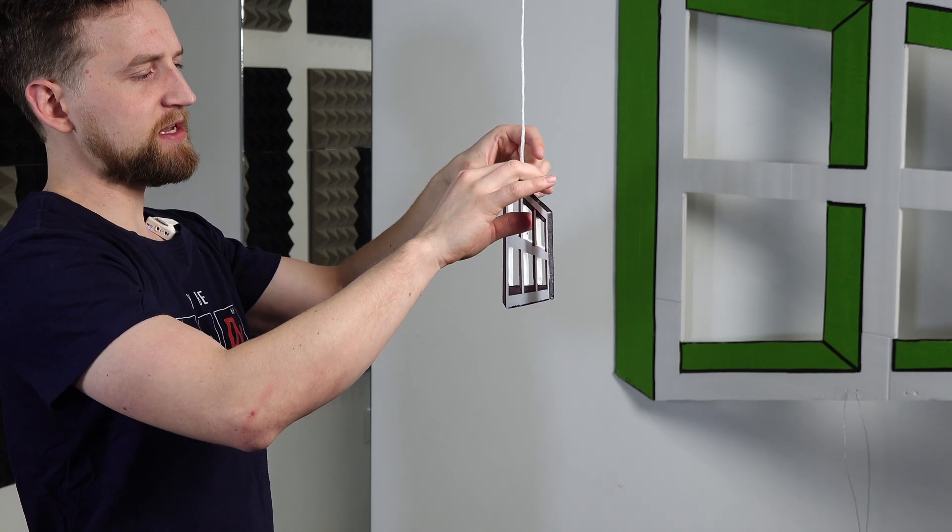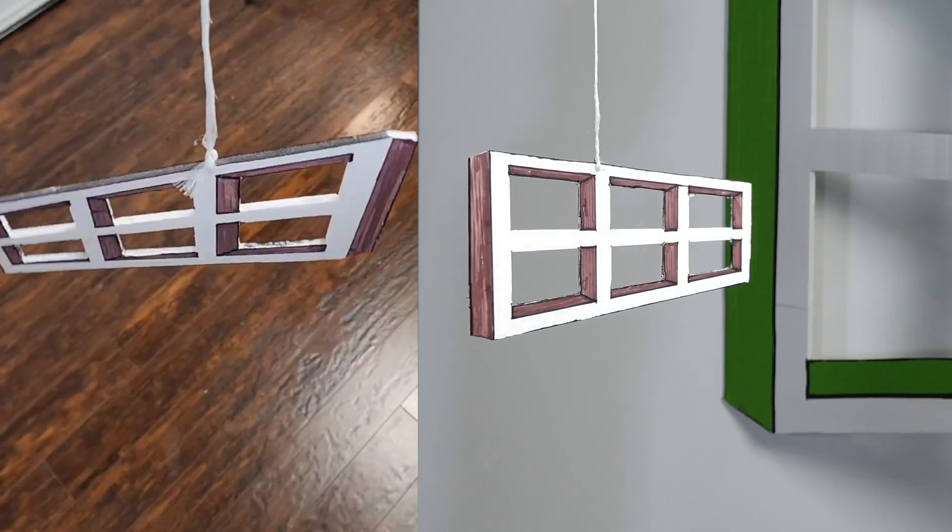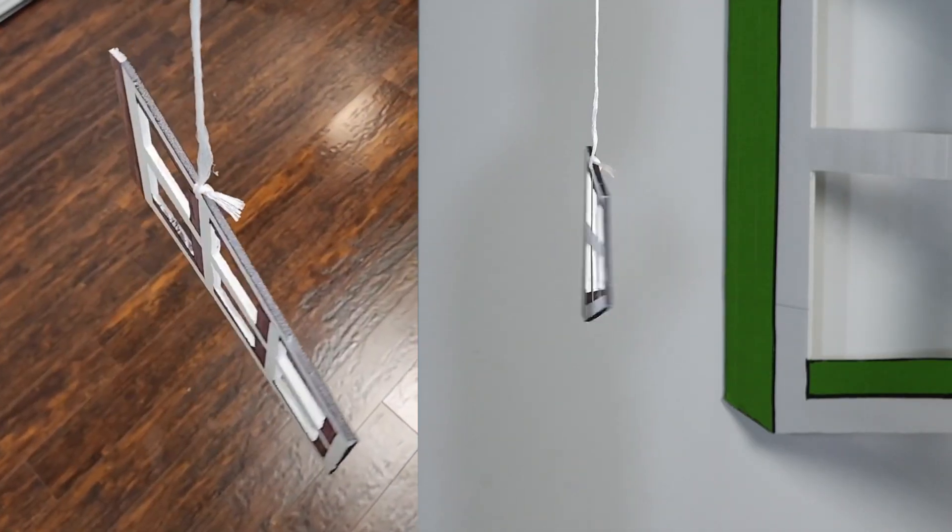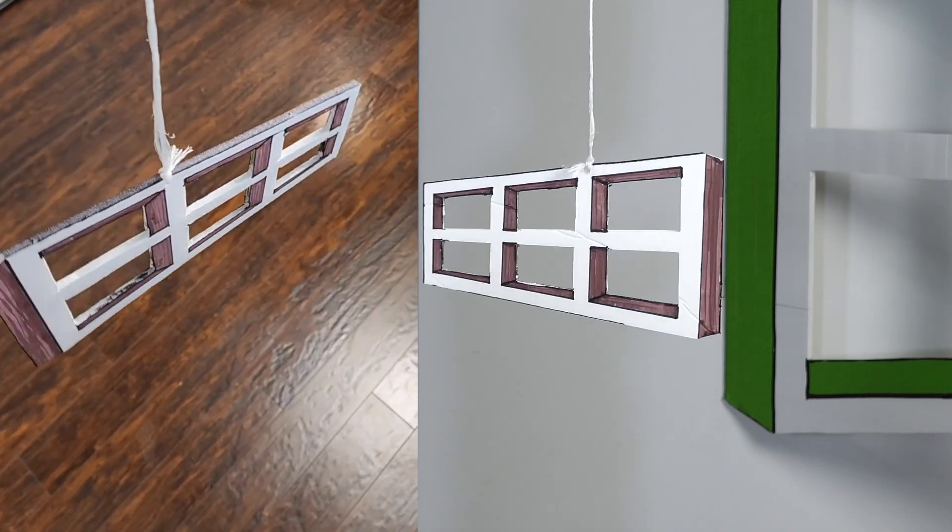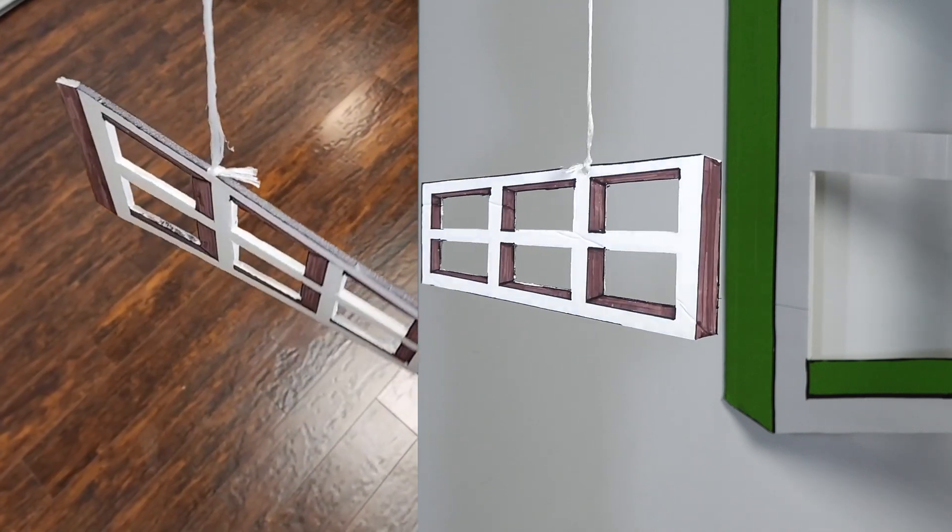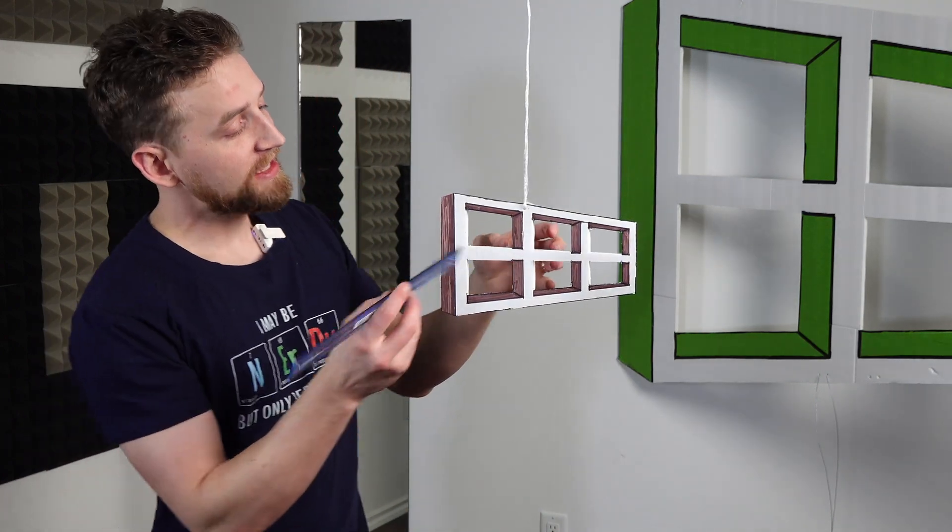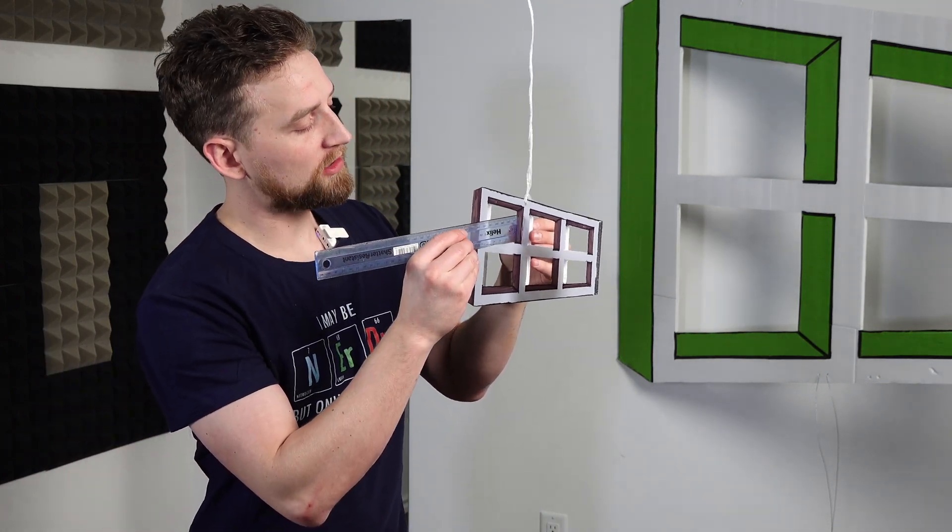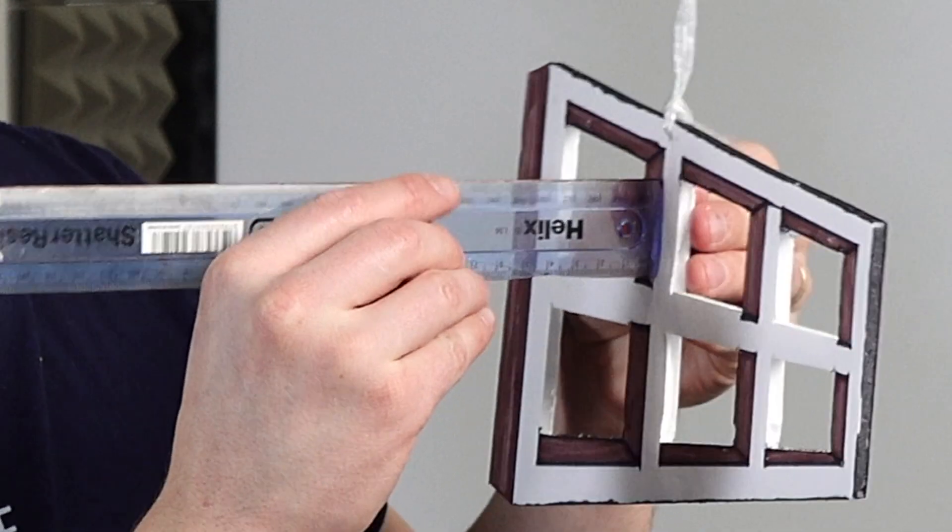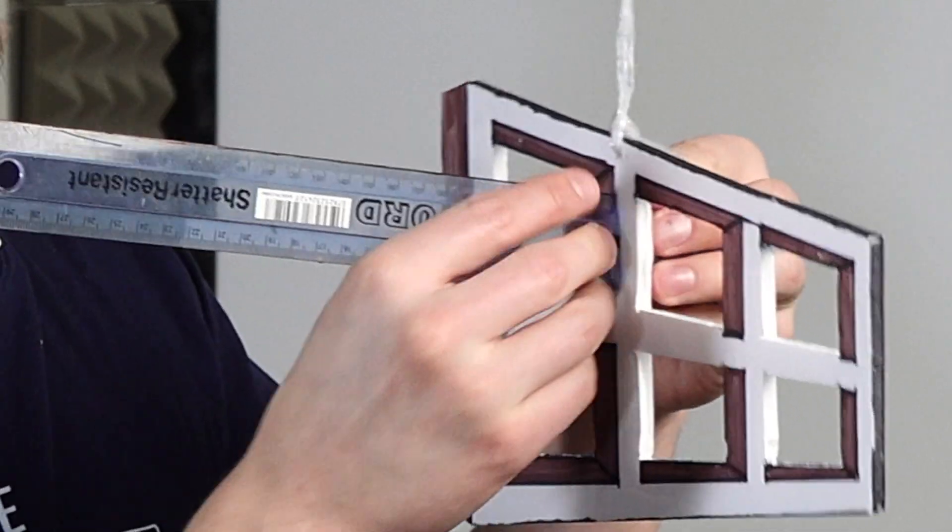So as this is spinning, it looks like it's flapping back and forth instead of turning in a circle. But clearly, it absolutely is spinning in a circle. So what happens if we introduce something else that we can stick into this model that we can clearly see is rotating? Let's find out.